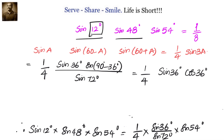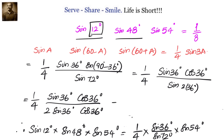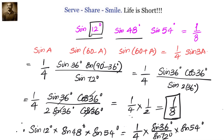We want to change that into sine, so we can use sin 2A equals 2 sin A cos A. In the numerator, sin 36 degrees into cos 36 degrees divided by sin 72 degrees — here A is 36 degrees, so 2 sin 36 degrees cos 36 degrees equals sin 72 degrees. Everything cancels out, leaving us with 1/4 into 1/2, that is 1/8. So sin 12 degrees multiplied with sin 48 degrees multiplied with sin 54 degrees equals 1/8.